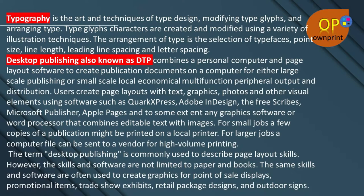Desktop publishing, also known as DTP, combines a personal computer and page layout software to create publication documents for either large-scale publishing or small-scale local, economical, multifunctional peripheral output and distribution. Users create page layouts with text, graphics, photos, and other visual elements using software such as QuarkXPress, Adobe InDesign, the free Scribus, Microsoft Publisher, Apple Pages, or any graphic software or word processor that combines editable text with images. For small jobs a few copies might be printed locally; for larger jobs, a computer file can be sent to a vendor for high-volume printing. The term desktop publishing is commonly used to describe page layout skills; however, the same skills and software are also used to create graphics for point-of-sale displays, promotional items, trade show exhibitions, retail package designs, and outdoor signage.